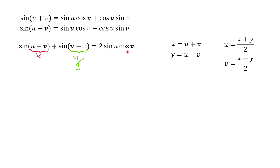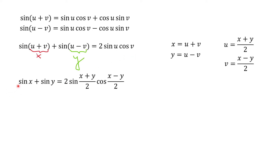Using all these substitutions to rewrite the equation, we get: sin(x) + sin(y) = 2 · sin((x + y)/2) · cos((x − y)/2).